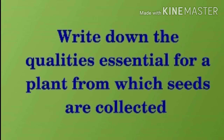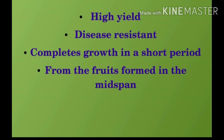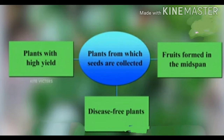Write down the qualities essential for a plant from which seeds are collected. Listen carefully: high yield, disease resistant, completes growth in a short period. Seeds should be collected from fruits formed in the mid-span. Write down your findings in your science notebook.